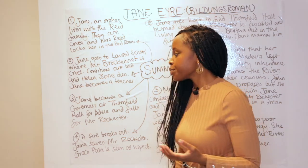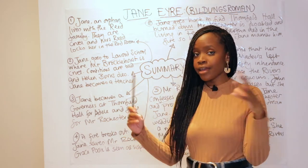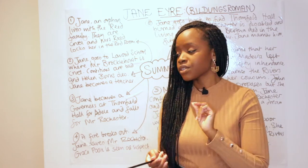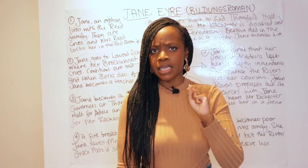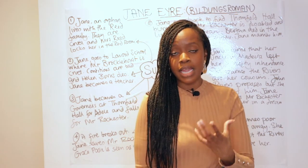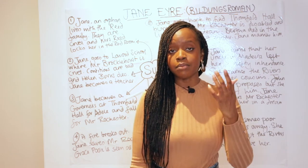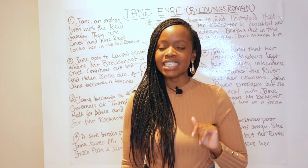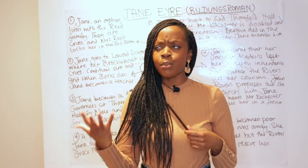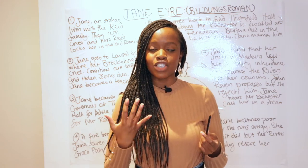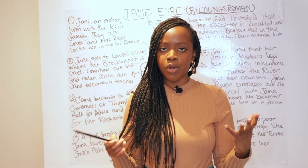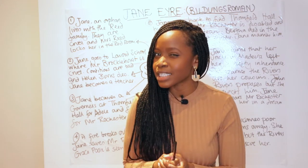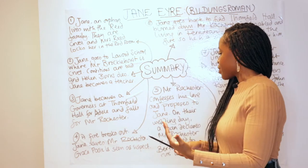Jane becomes a governess at Thornfield Hall and there she meets and falls in love with the head of the hall, Mr. Rochester. Whilst at Thornfield Hall, one mysterious night a fire breaks out. Jane hears very animalistic noises and, fortunately being awake, rushes to find the source of the fire is in Mr. Rochester's room. She wakes him up and saves his life. Mr. Rochester states it was probably Grace Poole, a servant living upstairs, who caused the fire — but Jane is puzzled as to why she's still allowed to stay if she tried to kill her master.